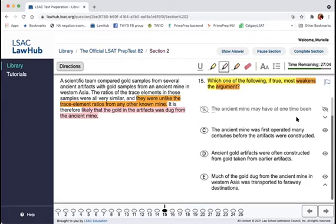Okay. C, the ancient mine was first operated many centuries before the artifacts were constructed. So this is just like a timeline sort of thing. So it doesn't really matter. So it's possible that the ancient mine was in operation for many centuries or maybe they stopped using it for a while and then came back to it or another civilization came back to it.